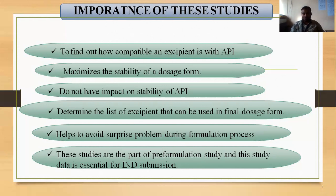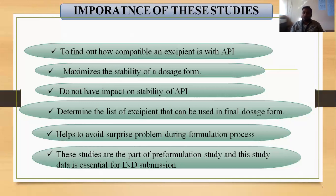Another importance is to help avoid surprise problems during formulation. If you do not know the chemical properties of particular excipients, it may show difficulties and problems in the formulation process. To avoid these problems, we conduct pre-formulation or drug-excipient compatibility studies. These studies are part of the pre-formulation study, and this study data is essential for new drug implementation and new drug invention — we need to go for pre-formulation, and drug-excipient compatibility study is part of that process.